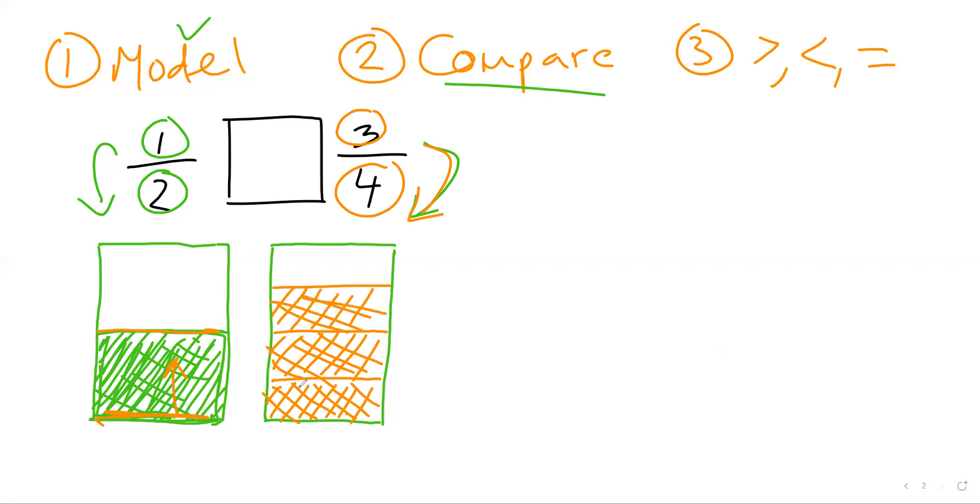So now we have this really cool model where we're going to just stop and look at it and say, well, which one's larger? What has more shaded in? What is a bigger fraction? And you can see here that if this was like a glass of water, three-fourths is filled up this high and one-half is filled up this high. So this is our larger fraction. So that means that one-half is less than three-fourths. That's the correct one.